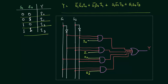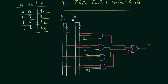Now the next step is to implement this logic by using the gates. 4 minterms are here.